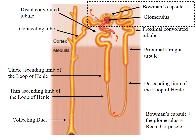The loop of Henle consists of the descending thin limb, the ascending thin limb, and the thick ascending limb. After the loop of Henle, it becomes coiled again — this is the distal convoluted tubule, or DCT. Finally, it joins the collecting duct. That is the complete structure of a nephron.